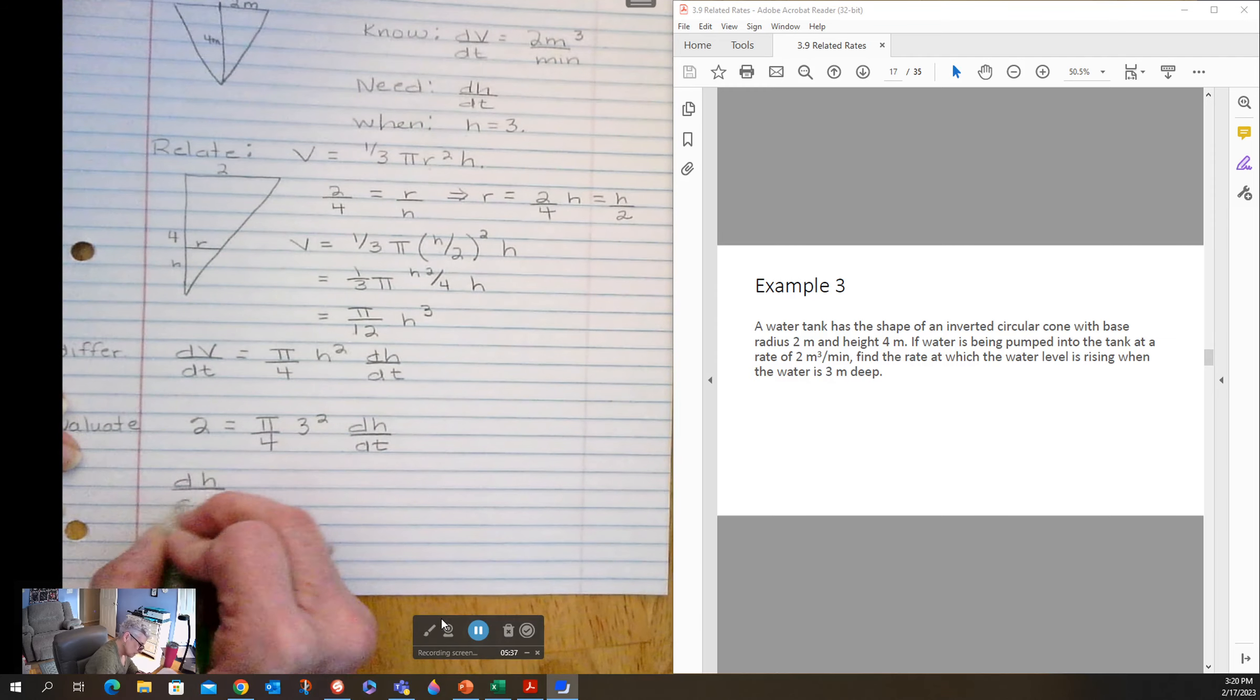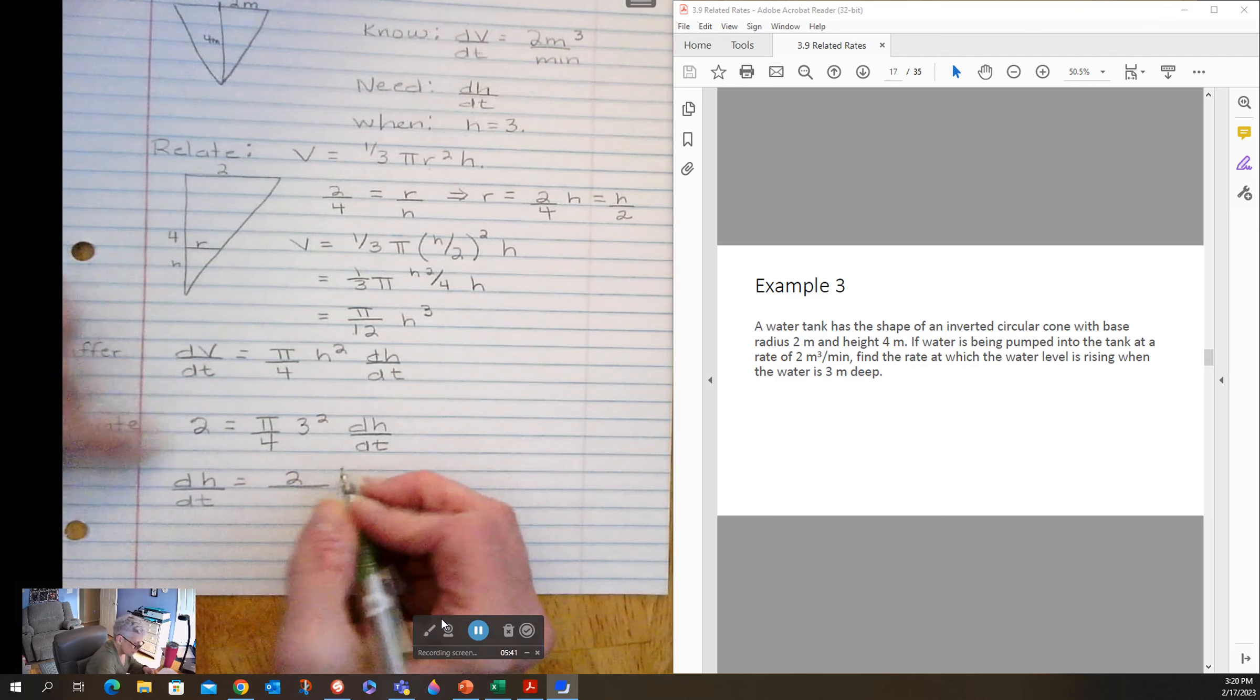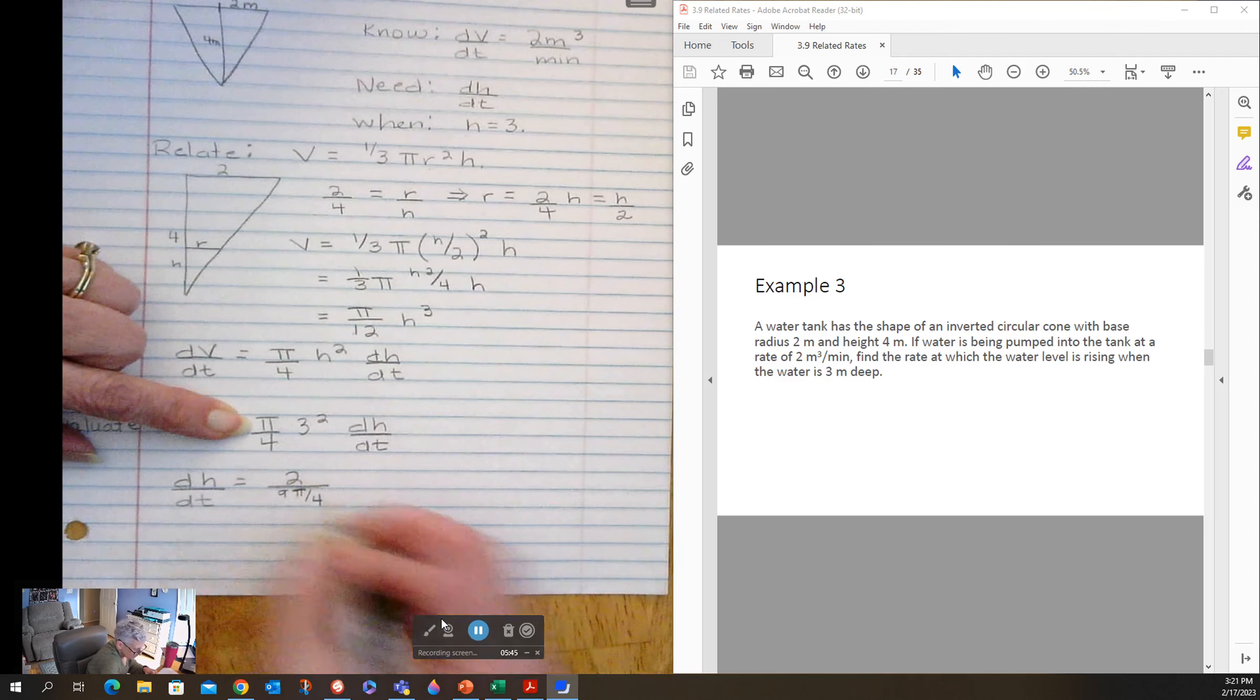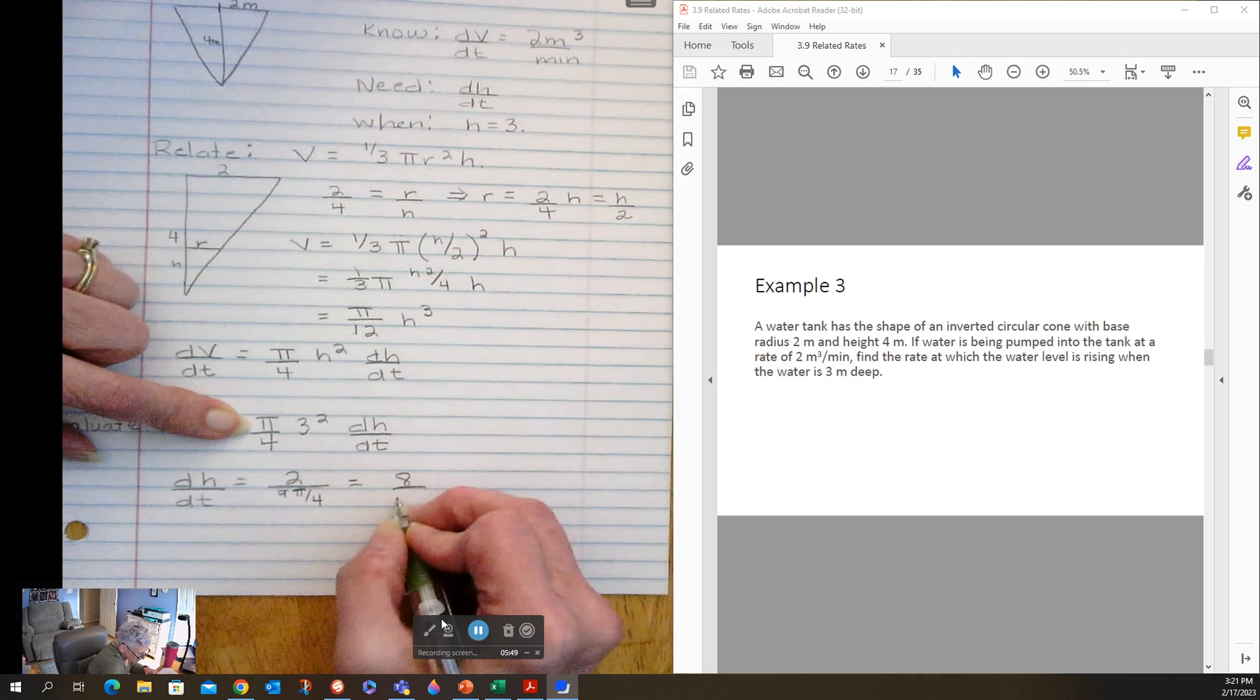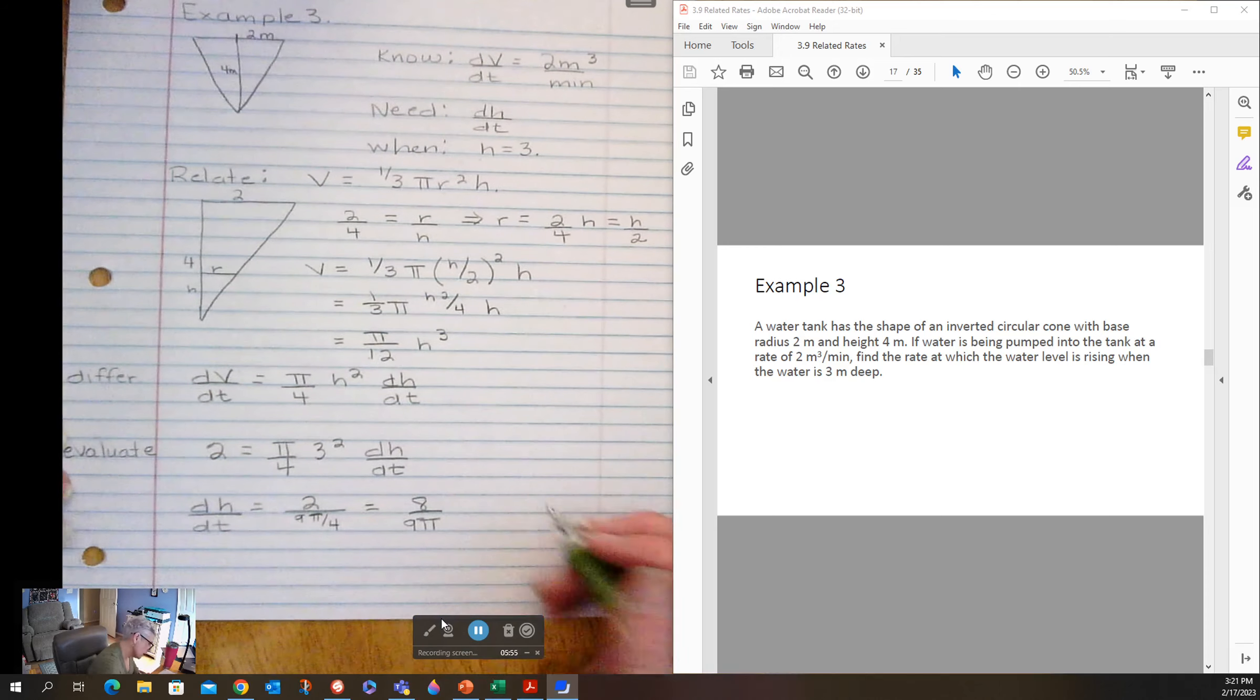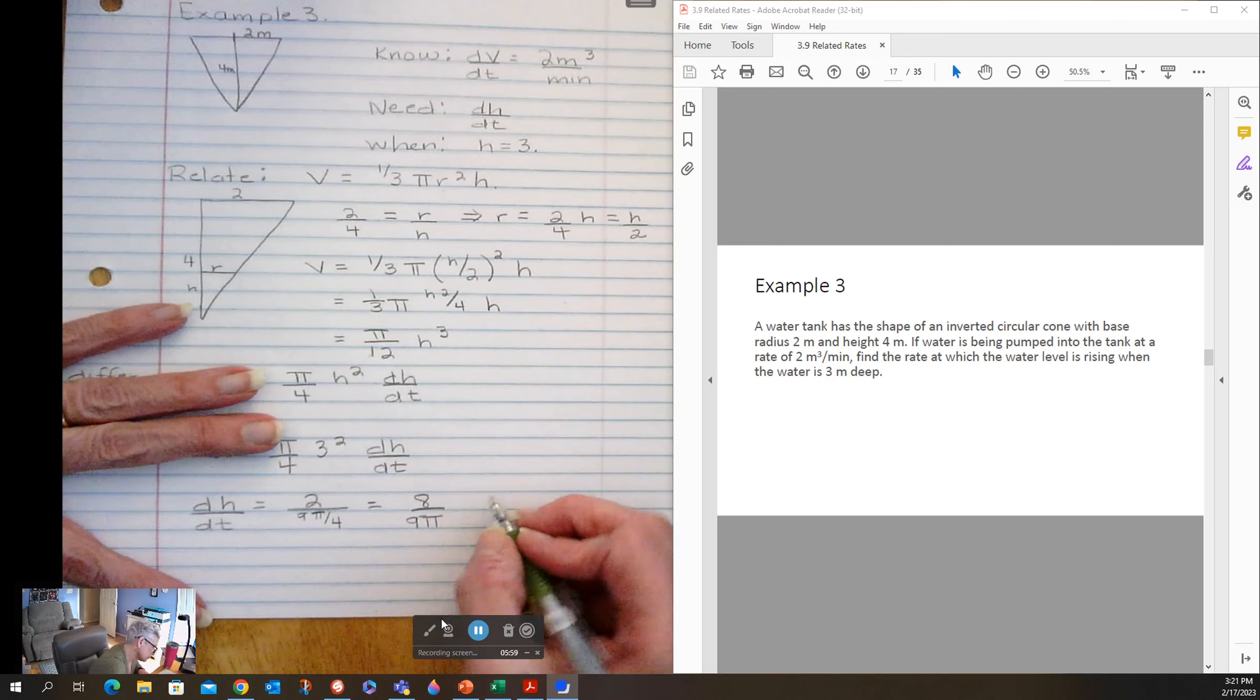So dH/dt is two divided by nine pi over four, which is eight over nine pi, just because fractions over fractions are ugly.